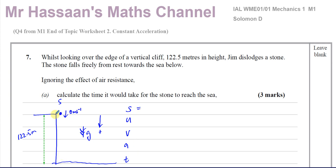Calculate the time it would take for the stone to reach the sea. It's going to fall under the effect of gravity, starting going down. I'm going to put down as positive — I always like to take the initial direction of movement as positive. It's falling under the acceleration due to gravity acting downwards, so we can use SUVAT here because we have constant acceleration. S is positive 122.5, initial speed U is zero, final speed V we don't know, acceleration A is positive G, and T is what we have to find.